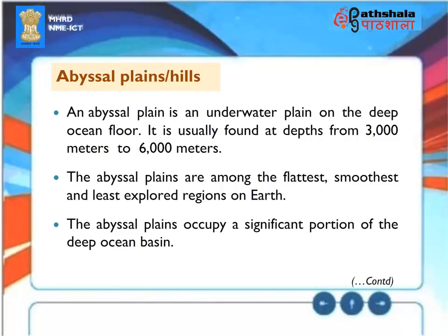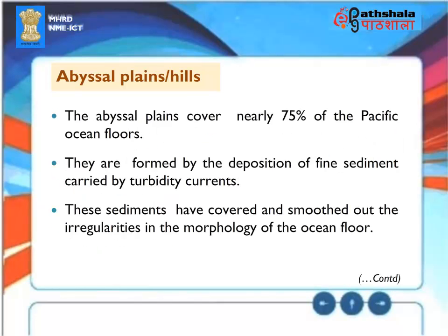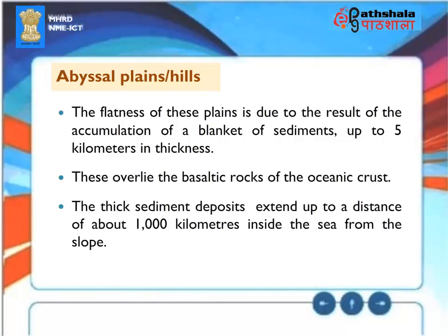Abyssal Plains and Hills: An abyssal plain is an underwater plain on the deep ocean floor, usually found at depths from 3,000 to 6,000 meters. They are among the flattest, smoothest, and least explored regions on Earth. Abyssal plains cover nearly 75% of the Pacific Ocean floors, formed by the deposition of fine sediment carried by turbidity currents, which smooths out irregularities in the ocean floor morphology. Their flatness results from accumulation of a blanket of sediments up to 5 kilometers thick overlying basaltic rocks of the oceanic crust, with thick sediment deposits extending up to 1,000 kilometers inside the sea from the slope.